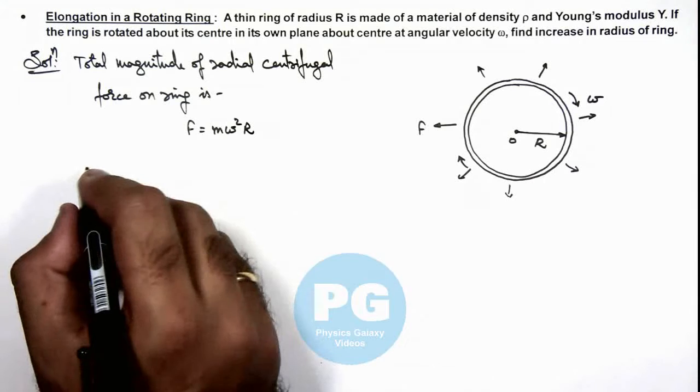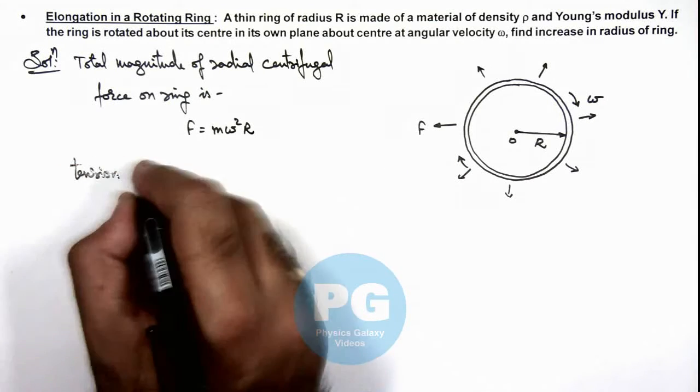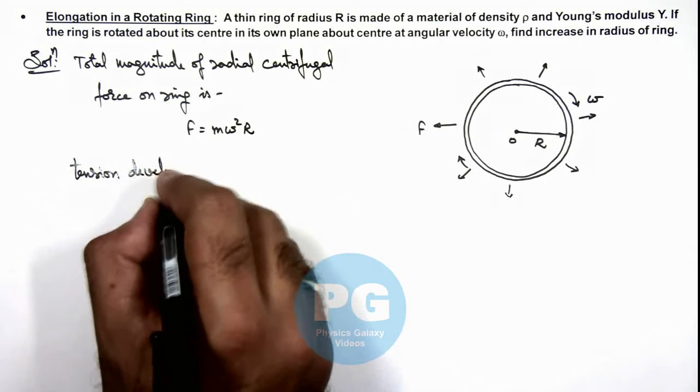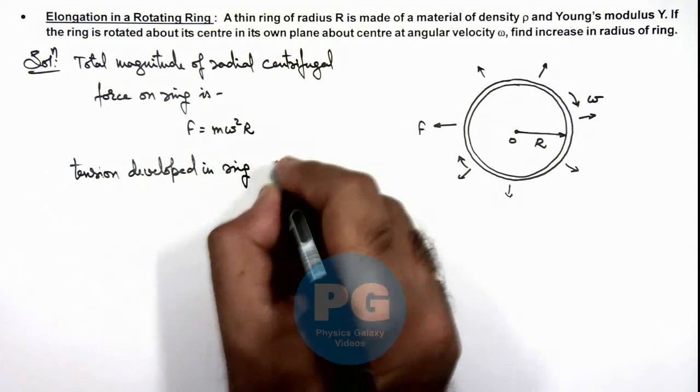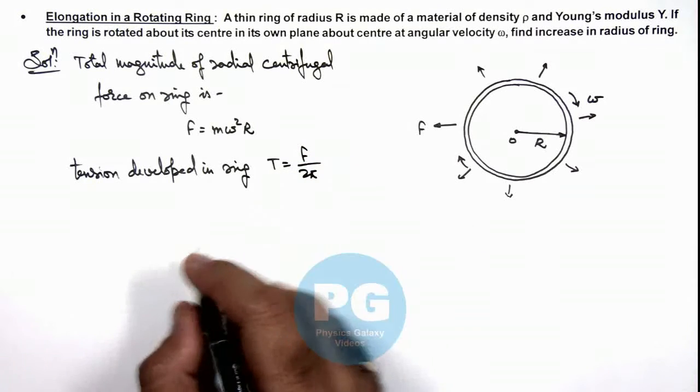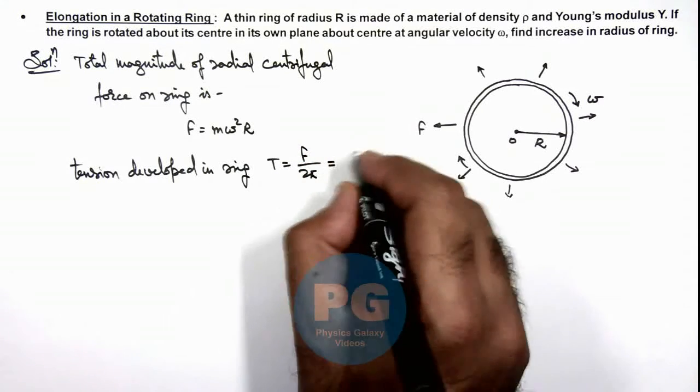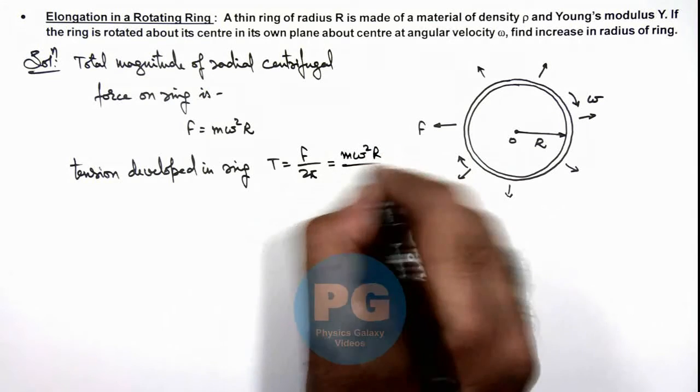And as we know, due to the radial force we can calculate the tension developed in ring, which can be given as the total radial force divided by 2π. So the numerical value of tension here will be m ω² R / 2π.